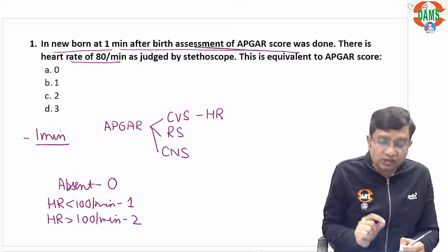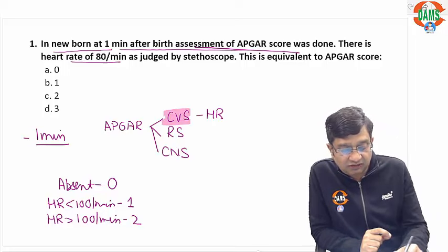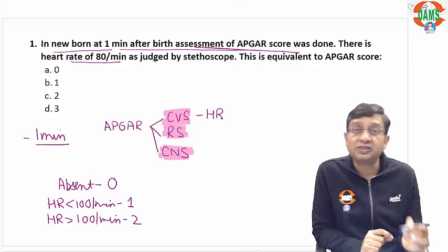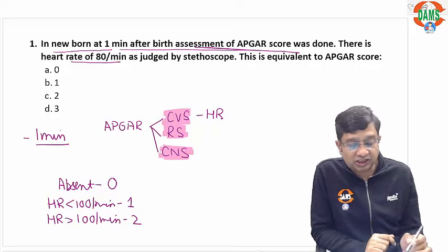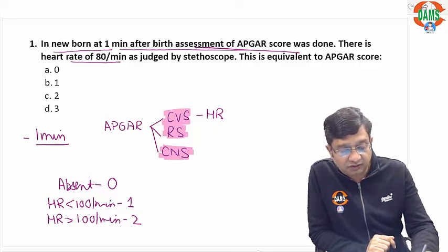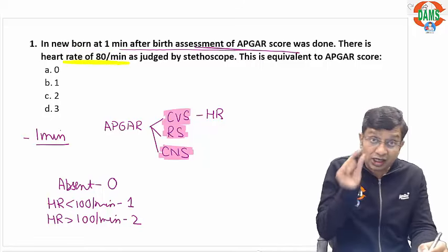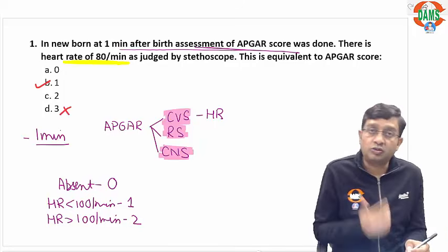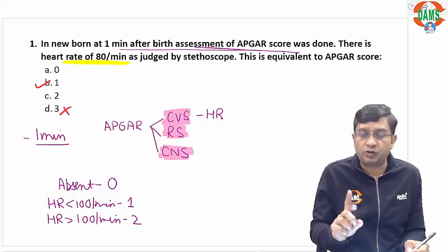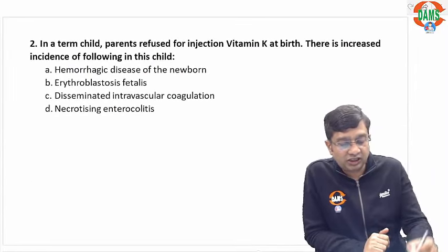If the heart rate is more than 100 per minute, you give a score of 2. The APGAR score judges three systems in a newborn: CVS, respiratory system, and CNS. It is taken at one minute after birth. In this question, the heart rate is 80 per minute, so the APGAR score for heart rate will be 1. The minimum for any component is 0 and the maximum is 2.